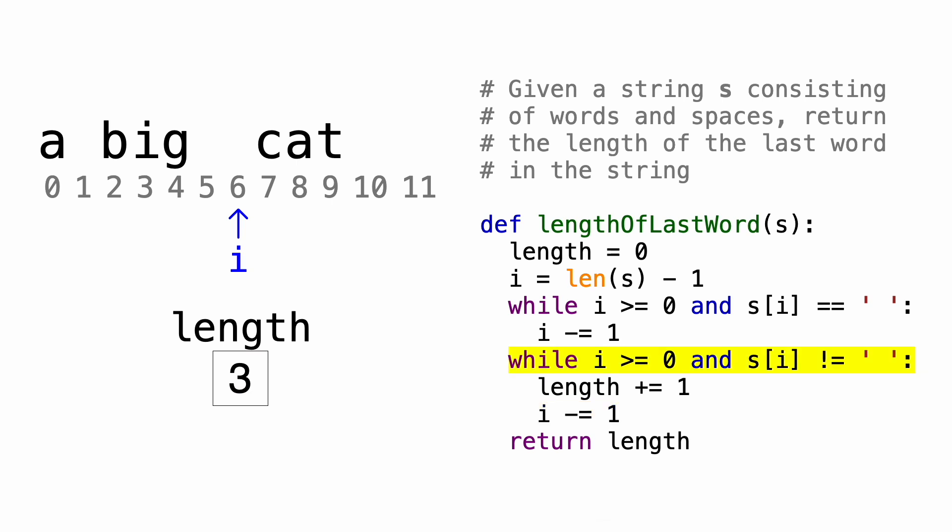But now when we check this condition, we see that the character at index 6 is a space. That means we finished traversing the word, so we can break out of this loop, and the only thing left to do is to return length, which is 3, since the last word in the string was cat, and the length of cat is 3. And we're done.